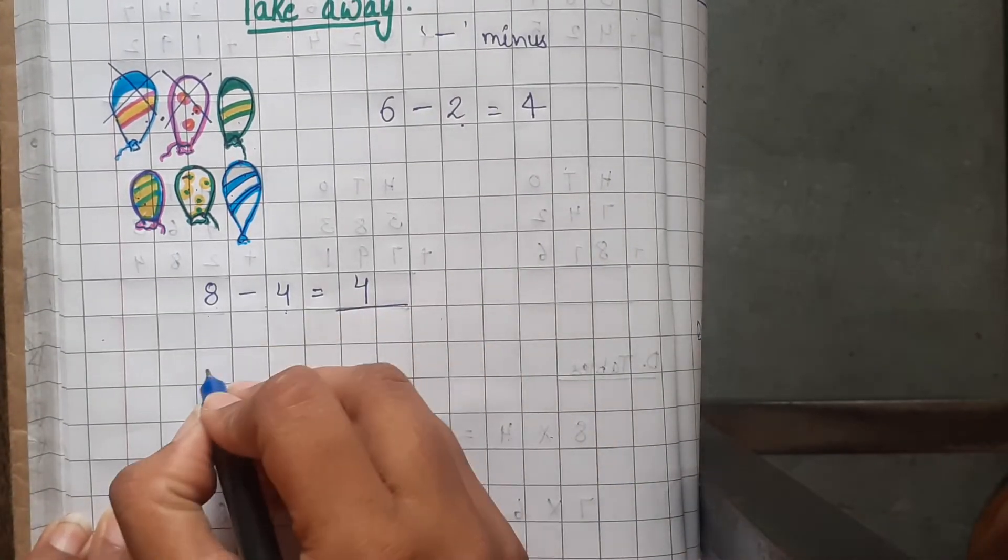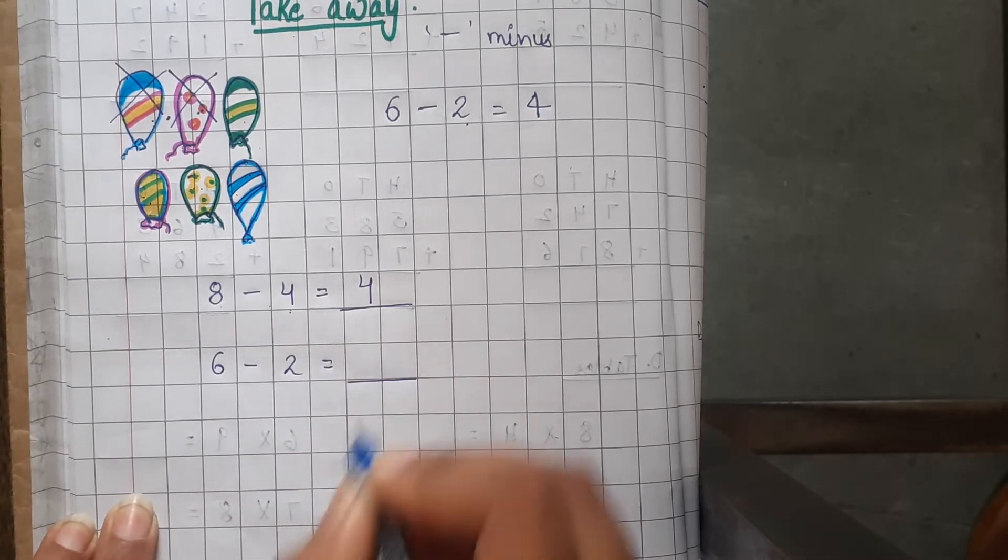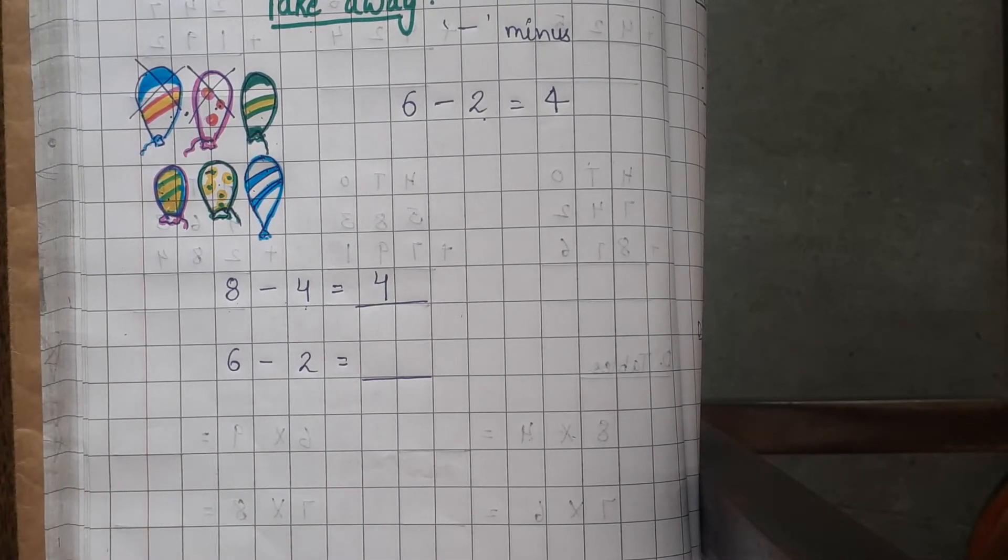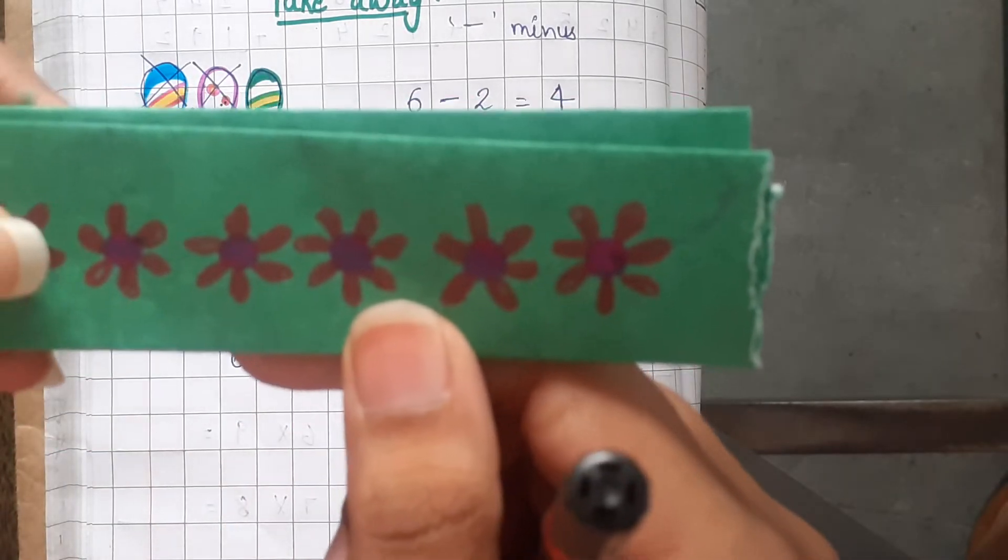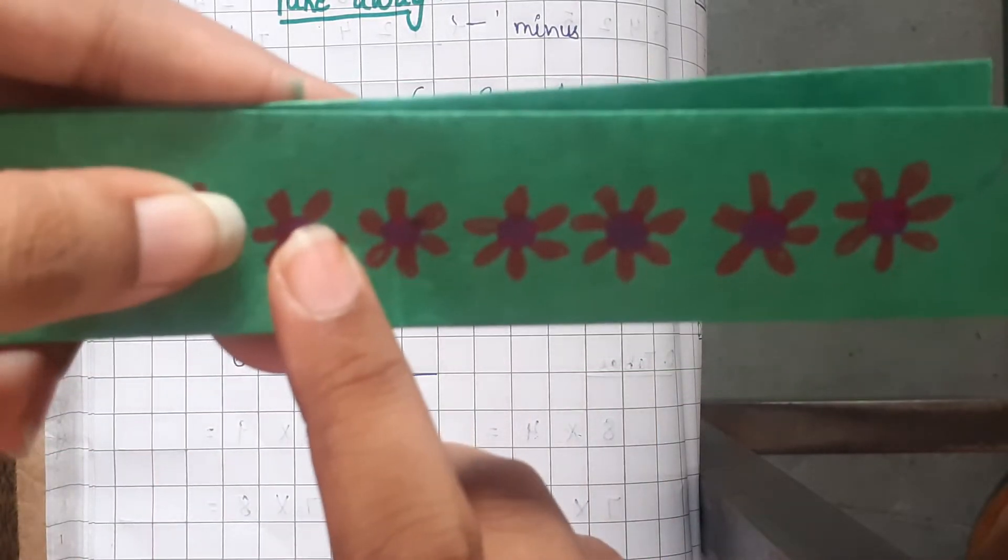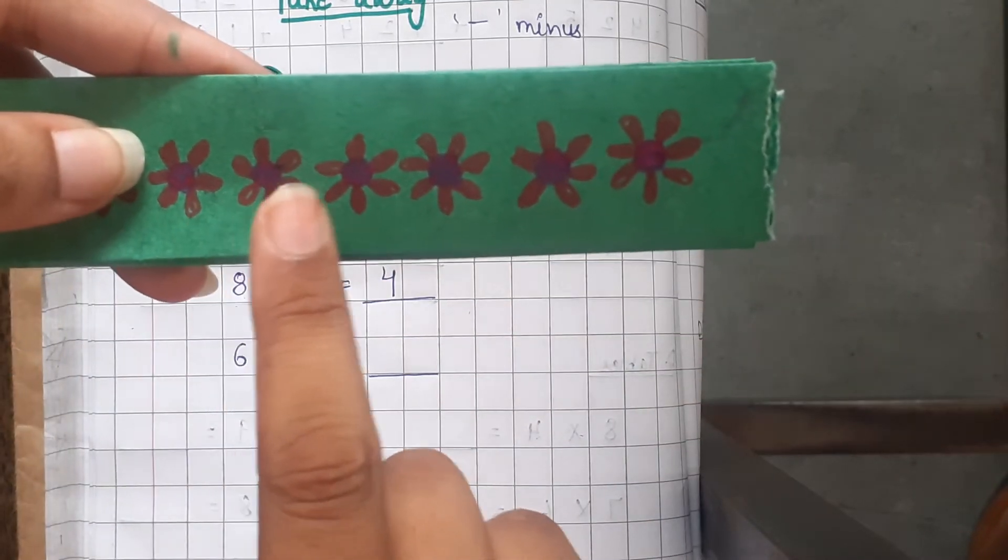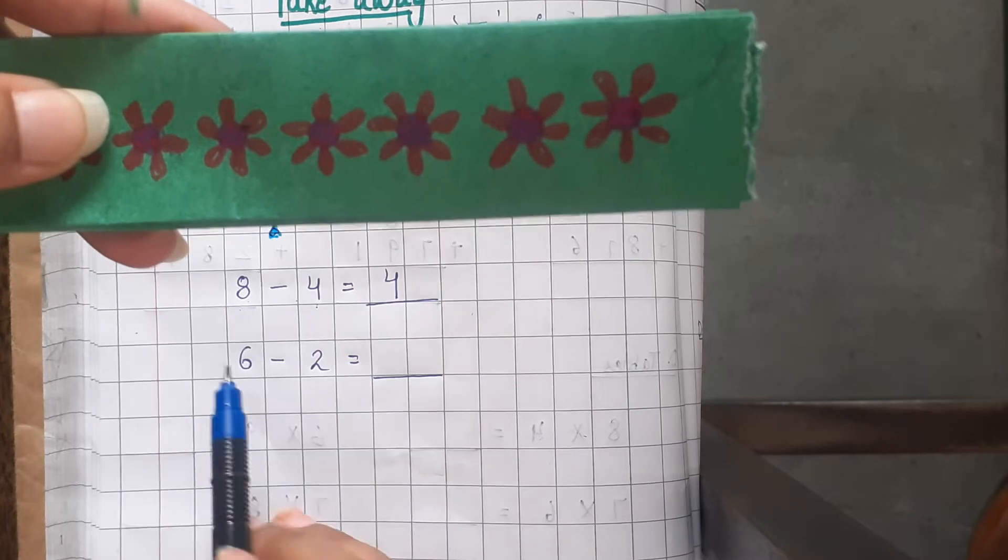Let us do one more: 6 minus 2 equals dash. Again, let us take help of this strip. 1, 2, 3, 4, 5, 6. Here are 6 flowers as you can see: 1, 2, 3, 4, 5, 6. 6 flowers.